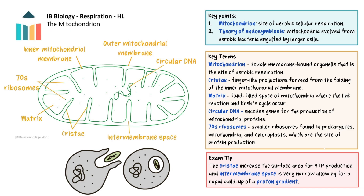Looking at the structure of a mitochondrion shown here, we can see that it is surrounded by a double membrane. The inner membrane is highly folded into cristae. These folds provide a large surface area for the electron transport chain and ATP synthases, which are involved in the final stages of respiration. The matrix, the fluid inside the mitochondrion, is where enzymes are found for the link reaction and Krebs cycle.